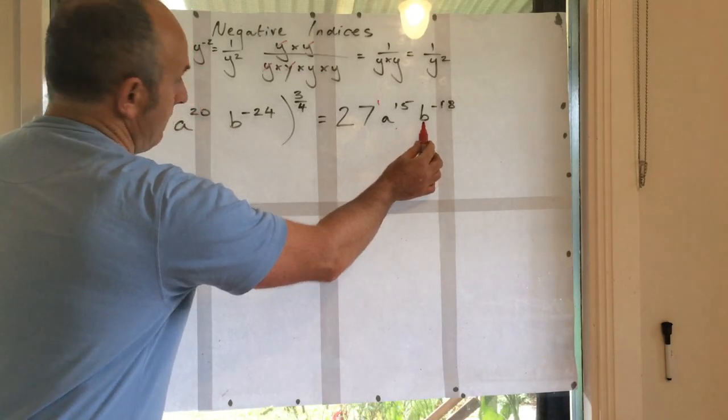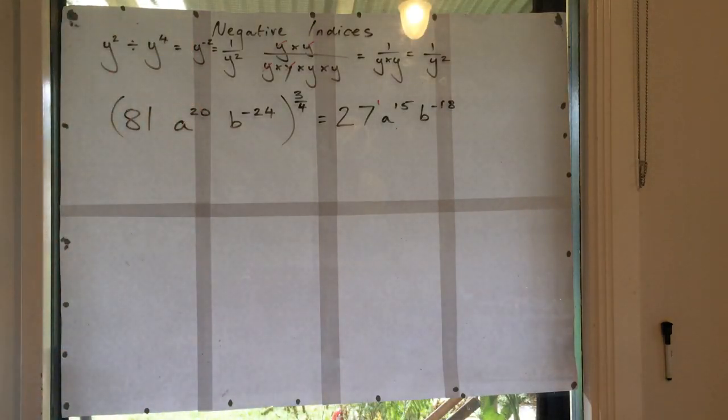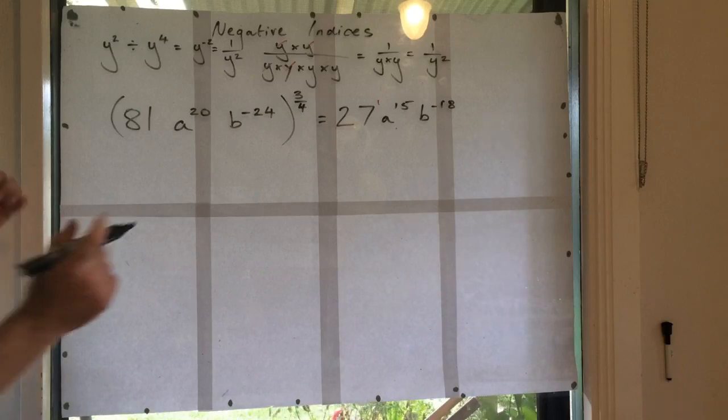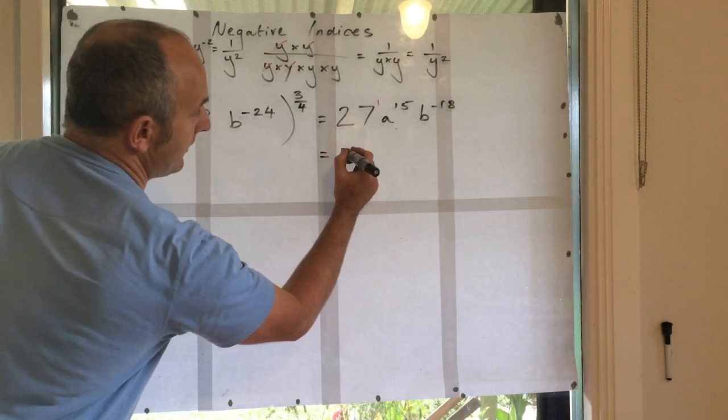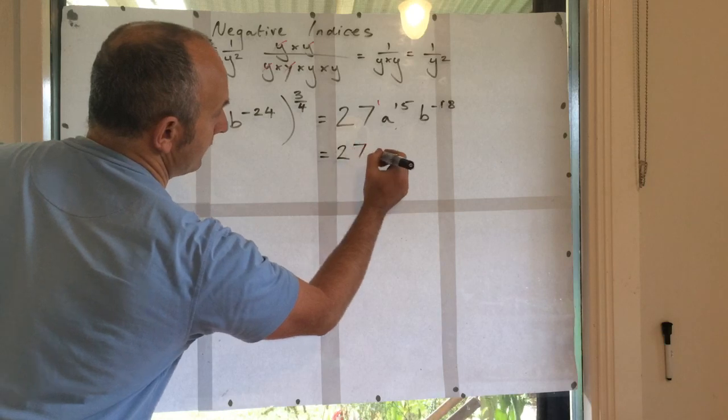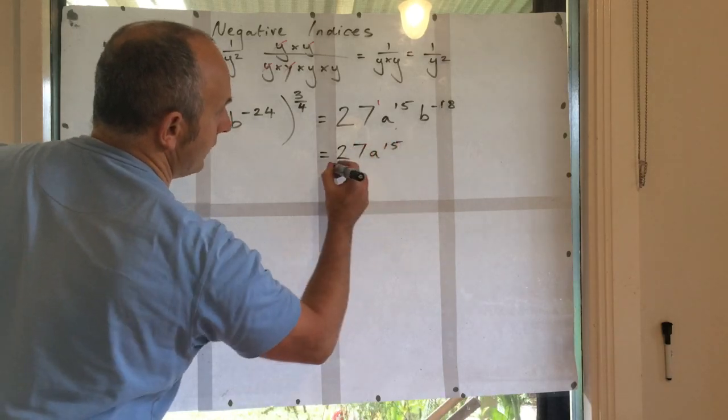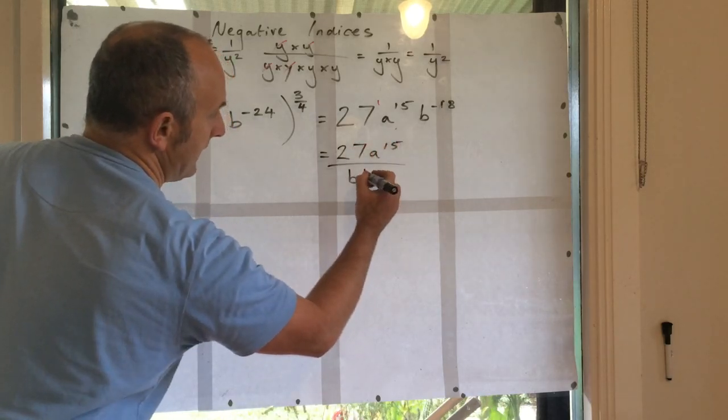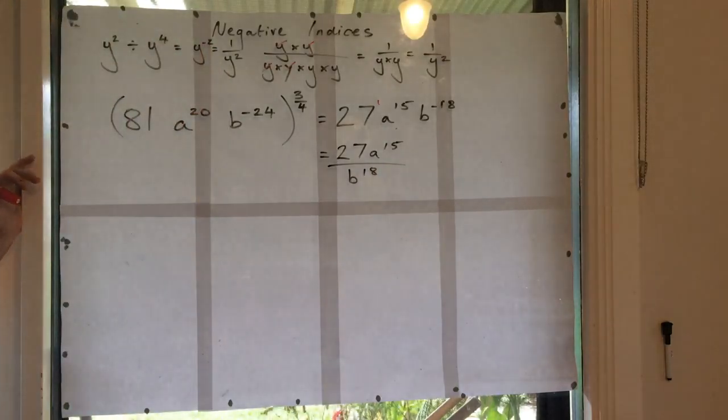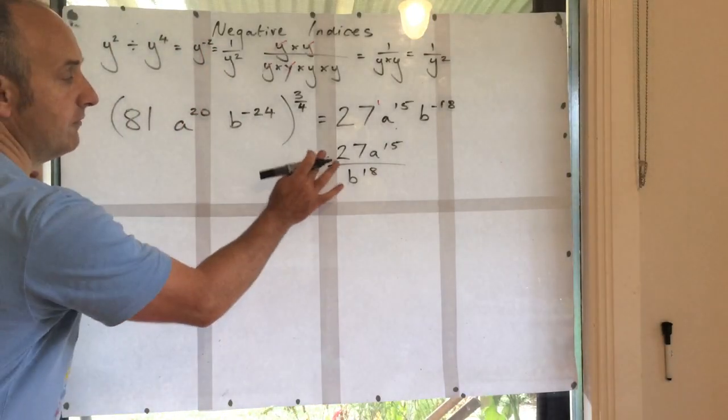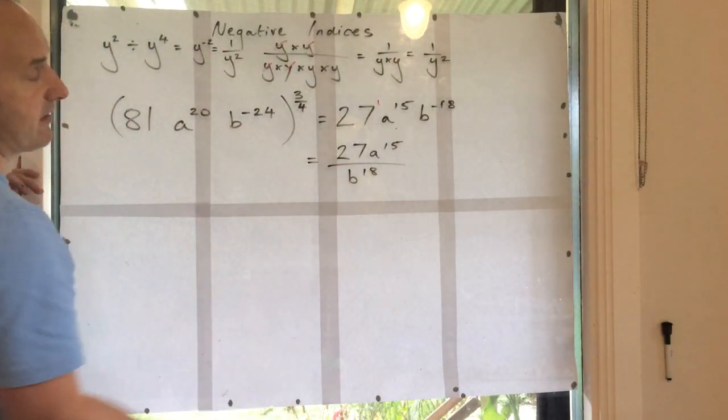Am I happy with this? No, I'm not, because it's a negative indice. So what I'm going to do is I need to move it down into the denominator. So I should end up with 27, a to the 15, over b to the 18. And that, now, is my final answer.